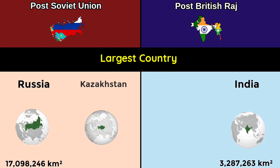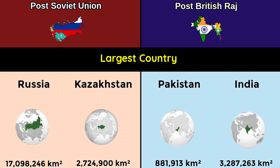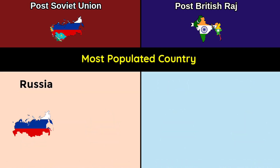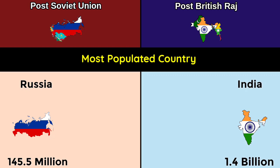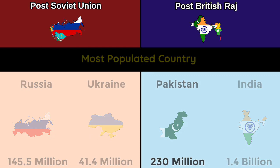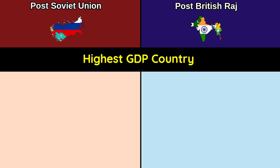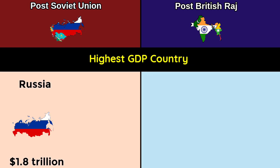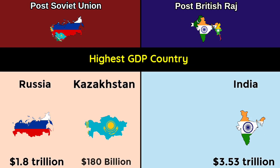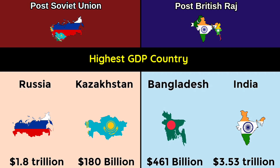Kazakhstan at 2.72 million km² versus Pakistan at more than 880,000 km². Most populated country: Russia at 145.5 million versus India at 1.4 billion; Ukraine at 41.4 million versus Pakistan at 230 million. Highest GDP country: Russia at $1.8 trillion versus India at $3.53 trillion; Kazakhstan at $180 billion versus Bangladesh at $461 billion.